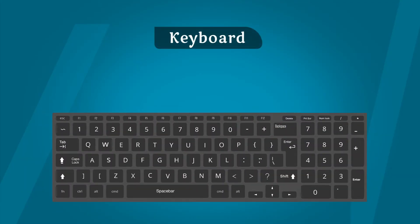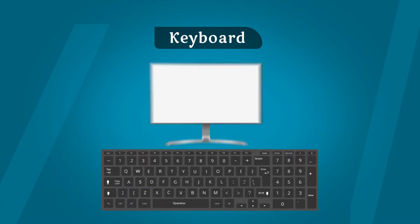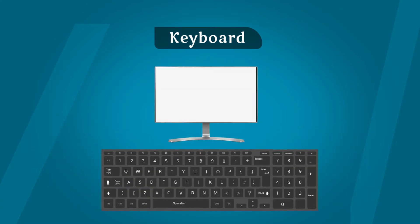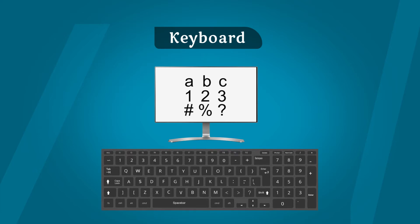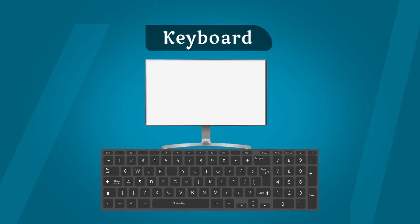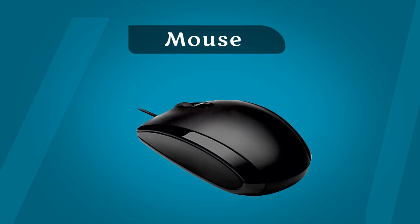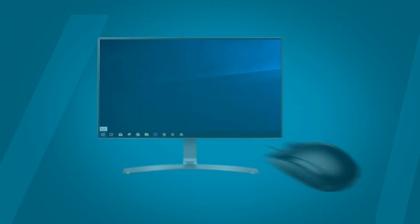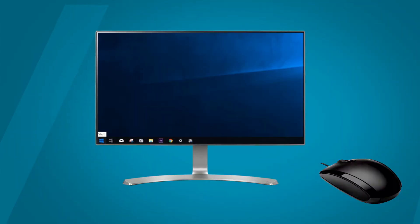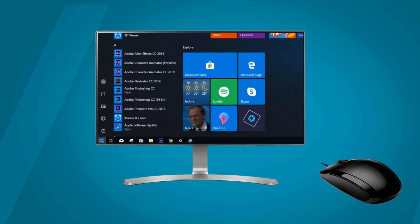Keyboard: A keyboard is used in a computer system to enter data. You can type words, numbers, and symbols using a keyboard. Mouse: A mouse is a pointing device. It is one way you can input data into the computer.